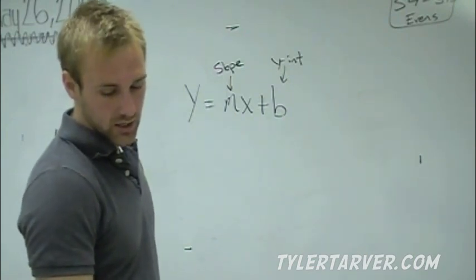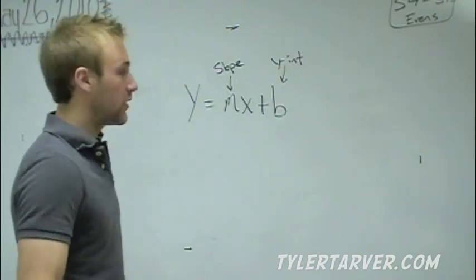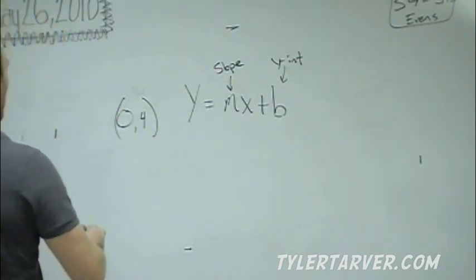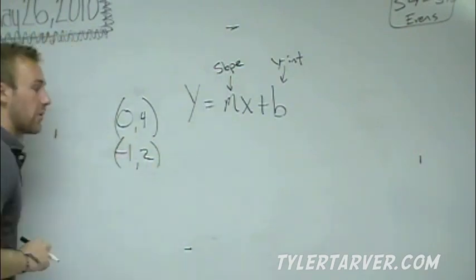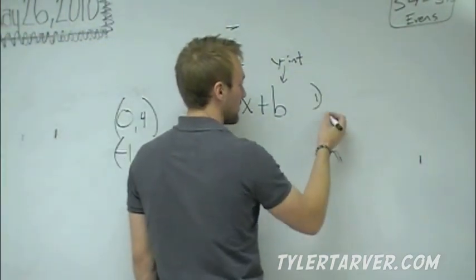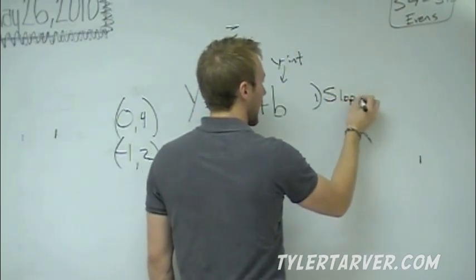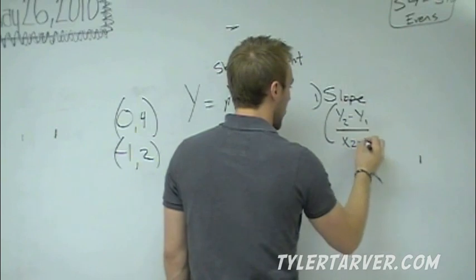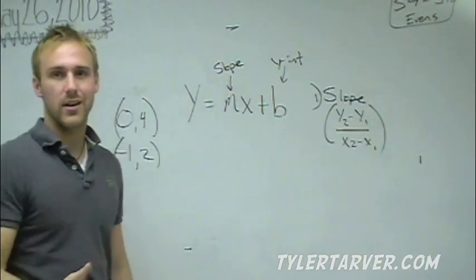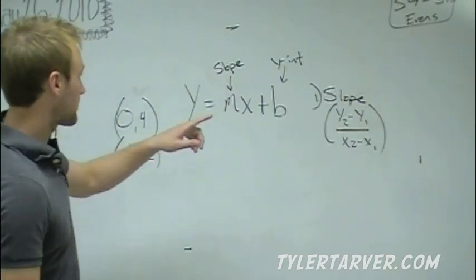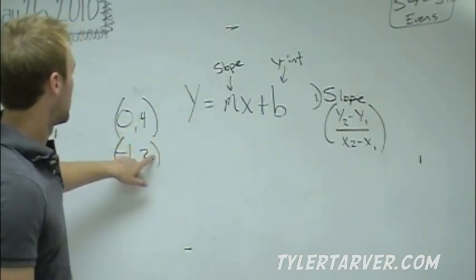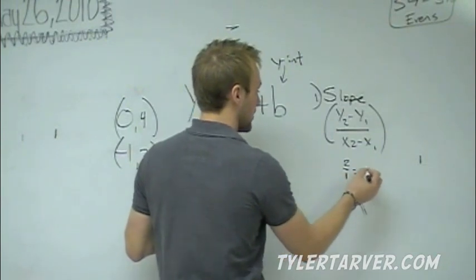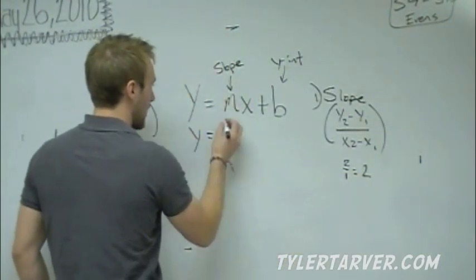Let's work a problem. They want you to write the equation in slope-intercept form for a line that goes through the points (0, 4) and (-1, 2). First step: find the slope. The slope formula is y2 minus y1 over x2 minus x1. So that's 4 minus 2, which is 2, over 0 minus negative 1, which becomes plus 1. So it's 2 over 1, which reduces to 2. Our slope is 2.